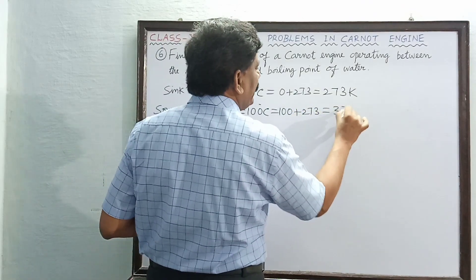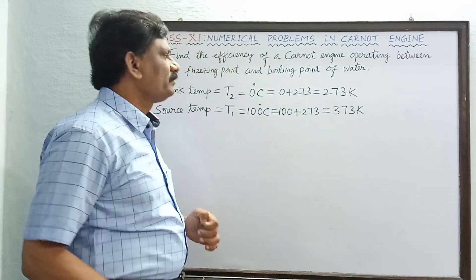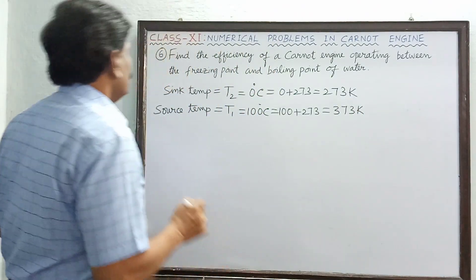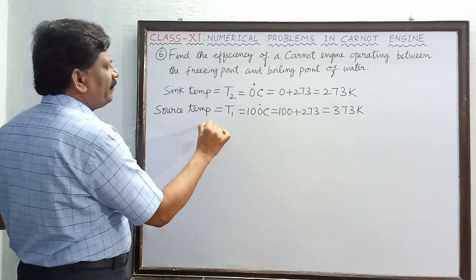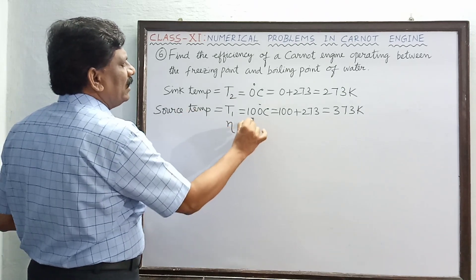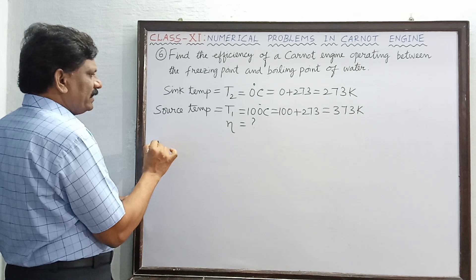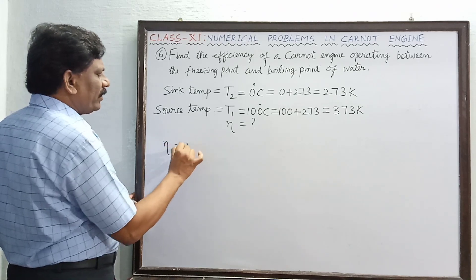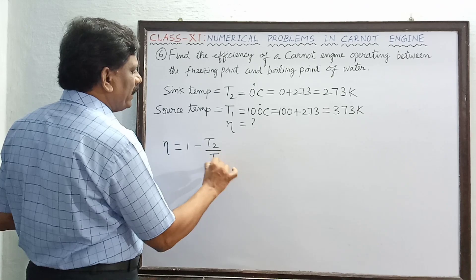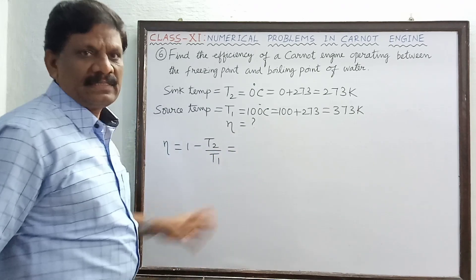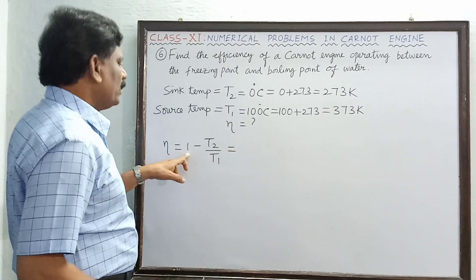Now the efficiency is asked. So the efficiency eta is equal to one minus T2 by T1. That is the general formula.